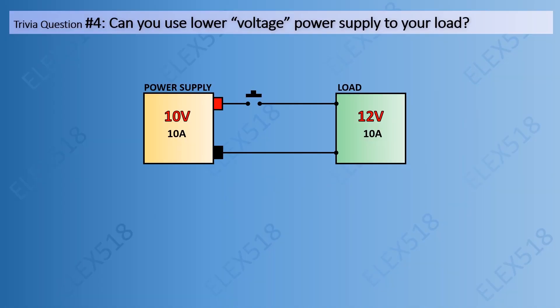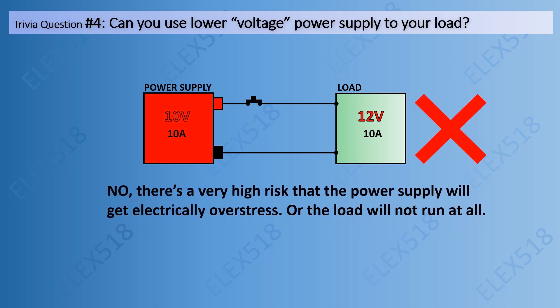Trivia question number four: Can you use a lower voltage power supply for your load? For example, a 10 volts power supply connected to a 12 volts load. No, there is a very high risk that the power supply will get electrically overstressed, or the load will not run at all.